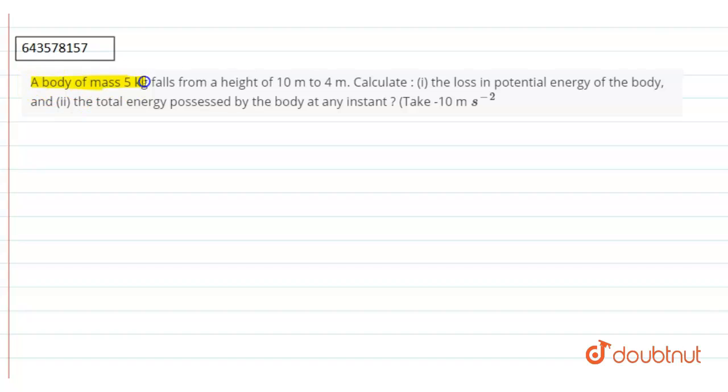Hello, so our question is: a body of mass 5 kg falls from a height of 10 meter to 4 meter. Calculate the loss in the potential energy of the body and the total energy possessed by the body at any instant. Take g equals to minus 10 meter per second square.